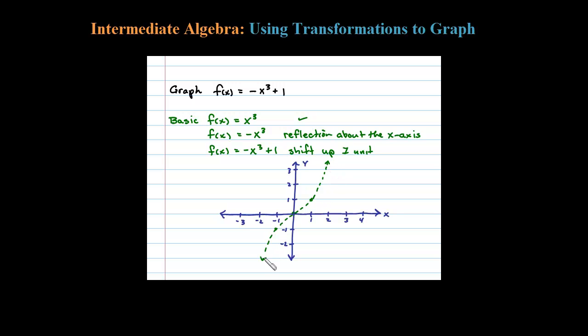Now let's look at the reflection. When you reflect this about the x-axis, the origin stays the same. This point would get reflected to (1, -1), and this point here would get reflected to (-1, 1). So the reflection would look something like that. Here you see the graph of -x³.